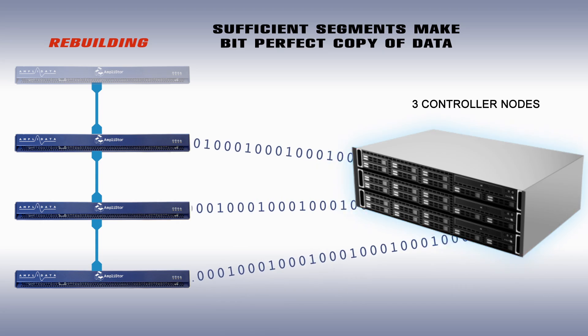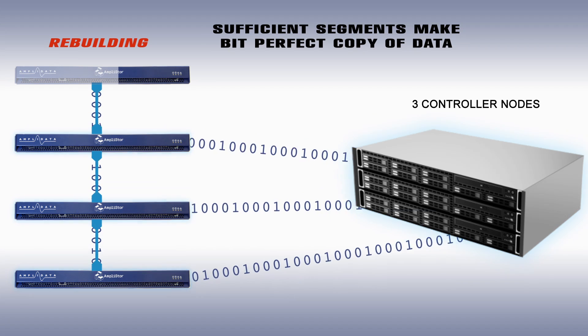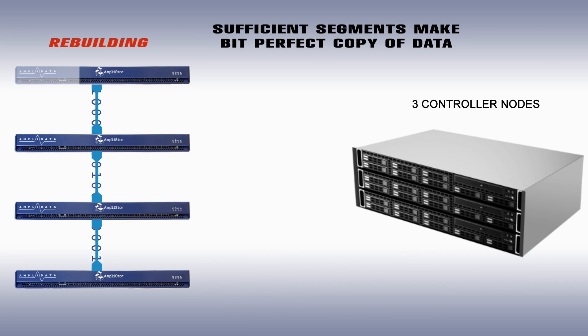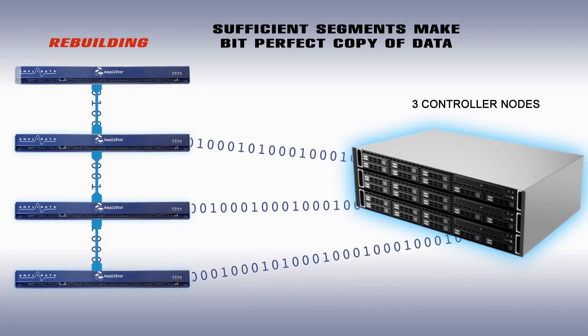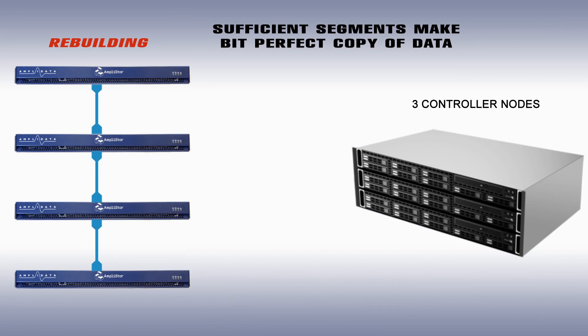What happens when a storage element — disk, node, or location — needs to be rebuilt? In a RAID system, a failed disk has to be rebuilt exactly as it was. Not so with rateless erasure codes. Only the fragments needed to restore desired redundancy are copied to a replacement or hot spare node.